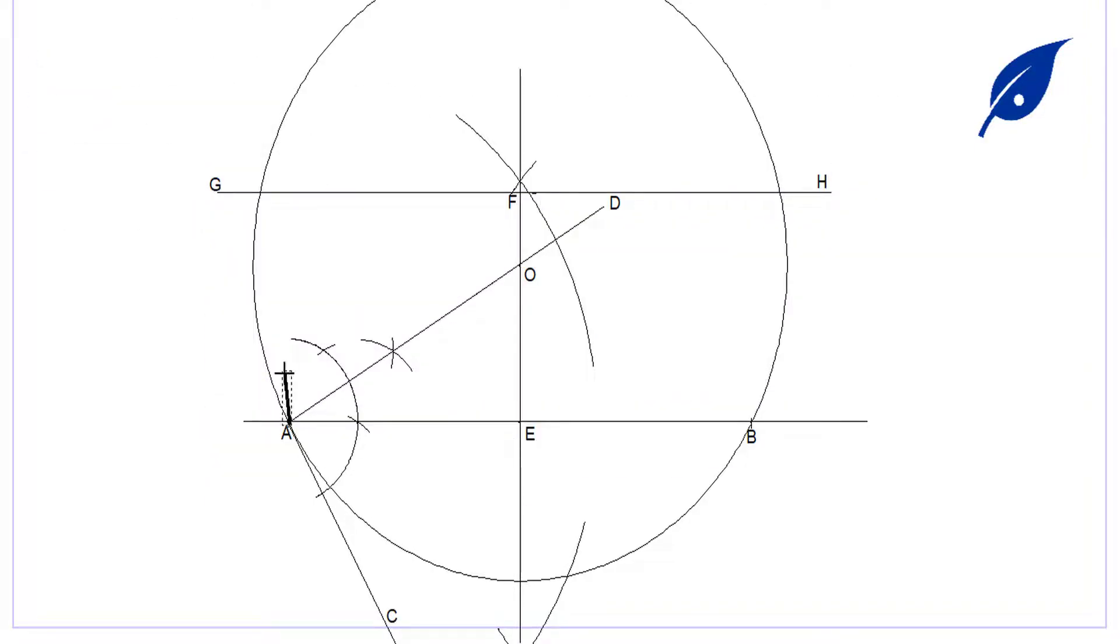Now we draw a parallel line to the line AB, passing through the point F, to give us GH.